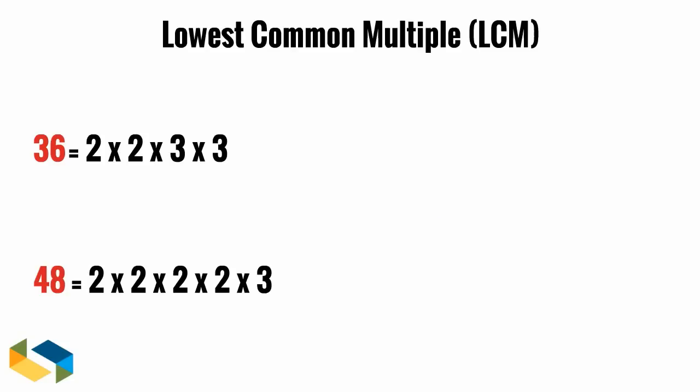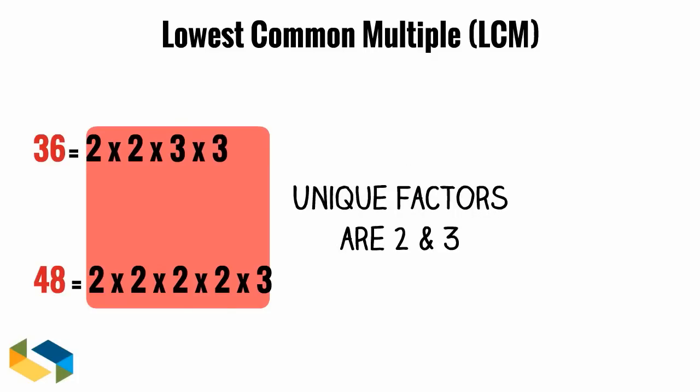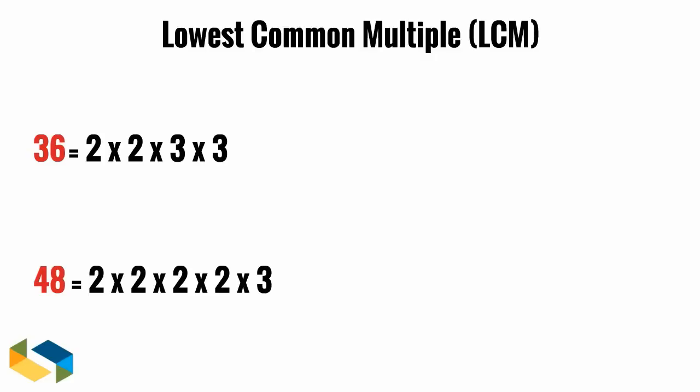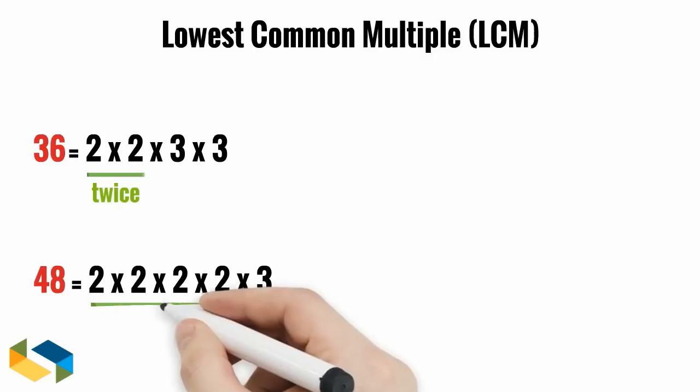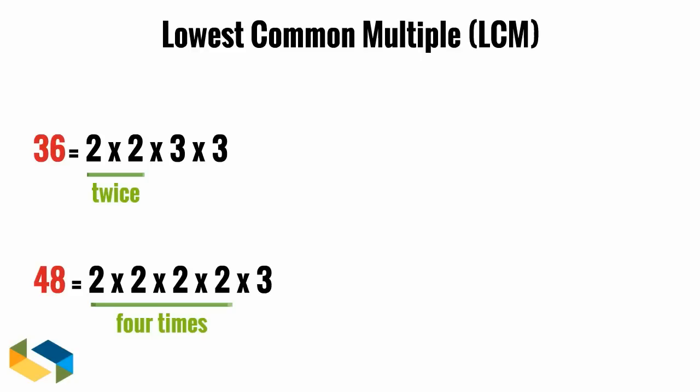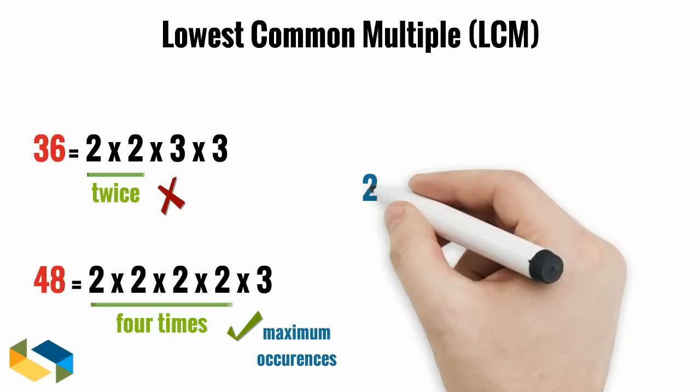Let me explain. In these prime factors here, we have the numbers 2 and 3. 2 appears twice in the number 36 and 4 times in 48. So we write down 2 4 times.